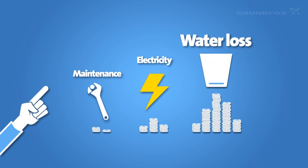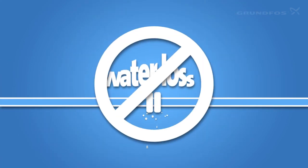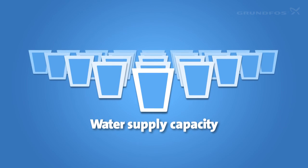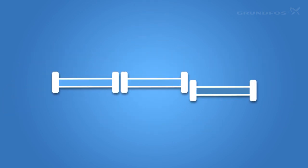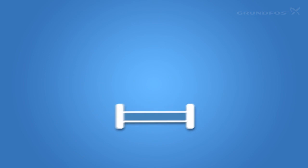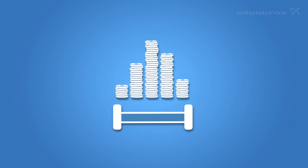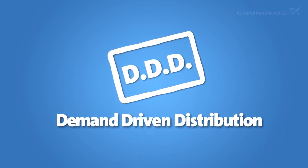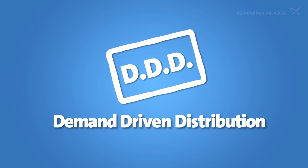Which leads us to one final point. By reducing water loss in the systems you already have, you automatically raise your water supply capacity. This means that you can postpone new investments in infrastructure for several years, simply by making the most of what you already have. Demand-driven distribution. A hidden problem has a new solution.